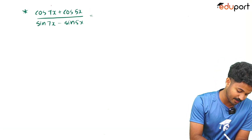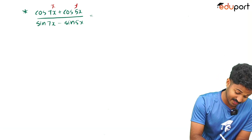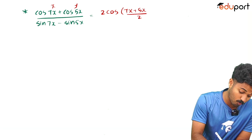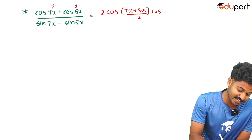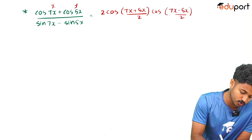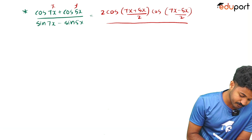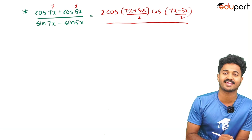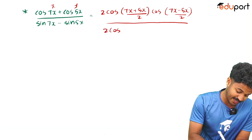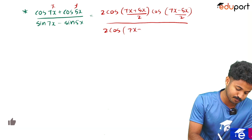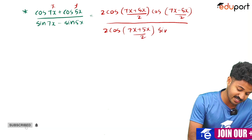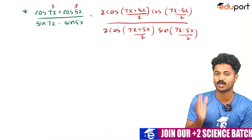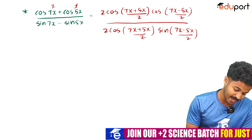Next: simplify (cos7x + cos5x)/(sin7x − sin5x). Using the sum-to-product formula, the numerator becomes 2·cos((7x+5x)/2)·cos((7x−5x)/2) = 2·cos(6x)·cos(x). The denominator sin7x − sin5x expands using the difference formula: 2·cos((7x+5x)/2)·sin((7x−5x)/2) = 2·cos(6x)·sin(x).